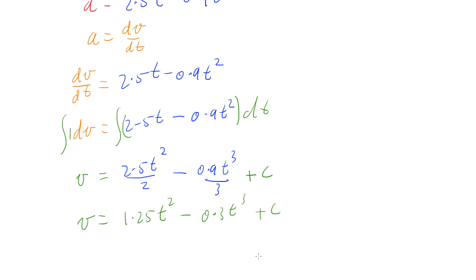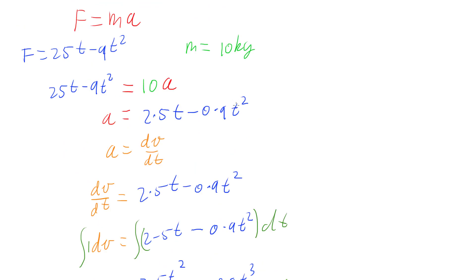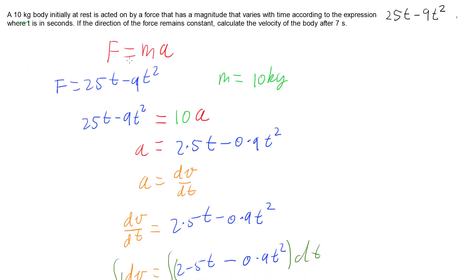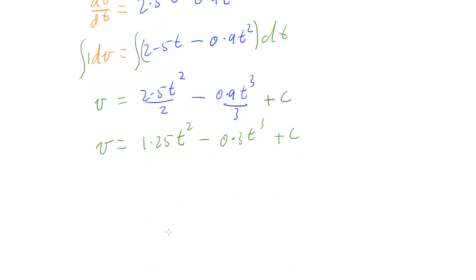So now we need to work out what our constant of integration is. And so if we go up to our question, we are told in our question that the body is initially at rest. And so that means its initial velocity is 0. So that means that at time equals 0, its velocity was 0. And so that means if I put those numbers into here, I've got 0 equals 1.25 times 0 squared minus 0.3 times by 0 cubed plus c. So all of this cancels out, c equals 0.